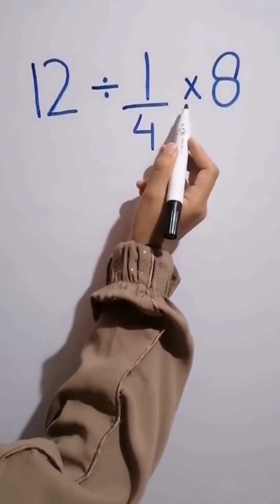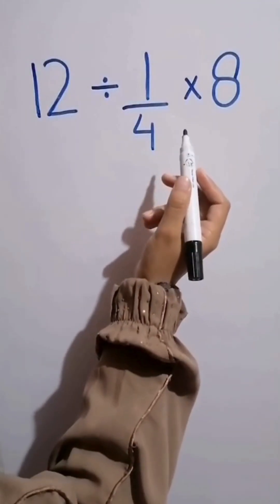12 divided by 1 over 4 then times 8. This question confused a lot of people.